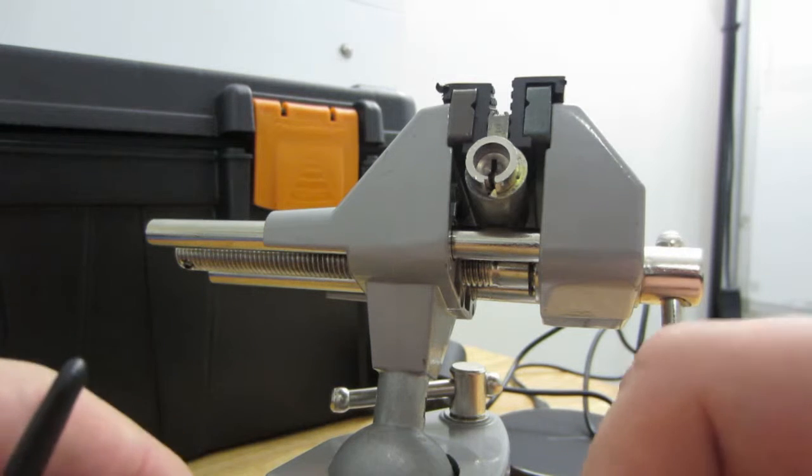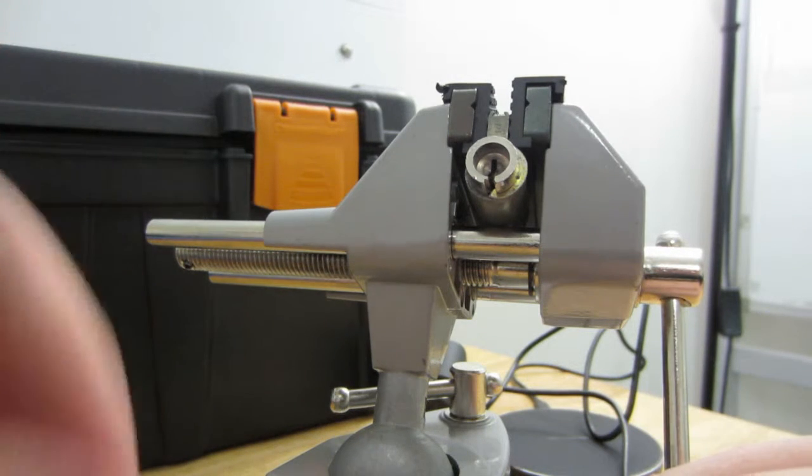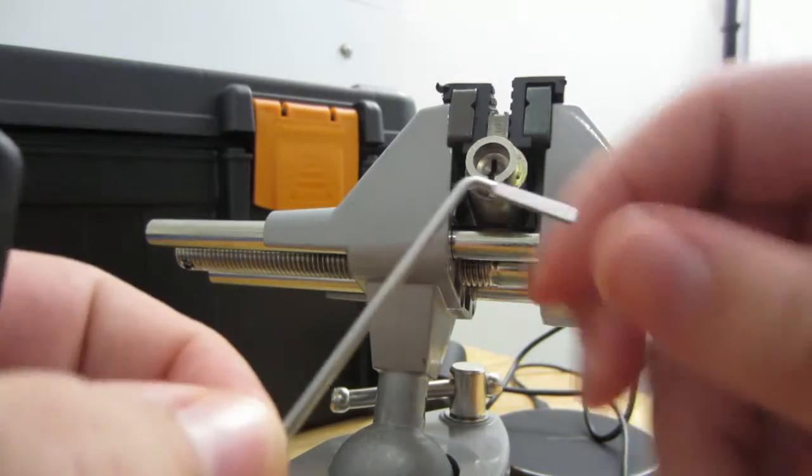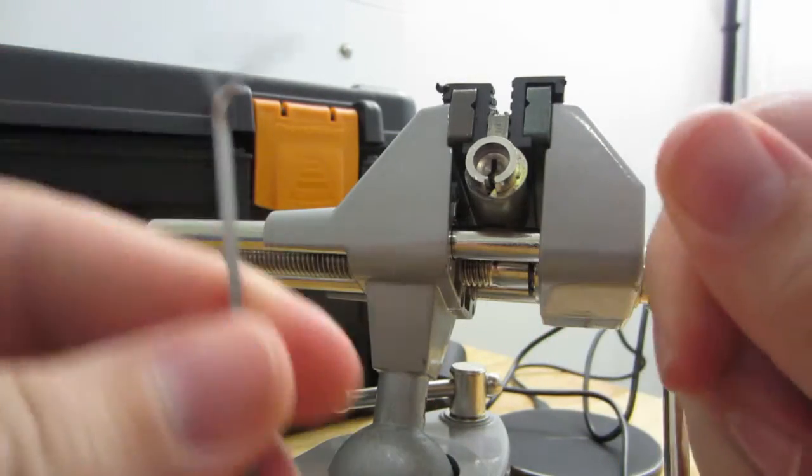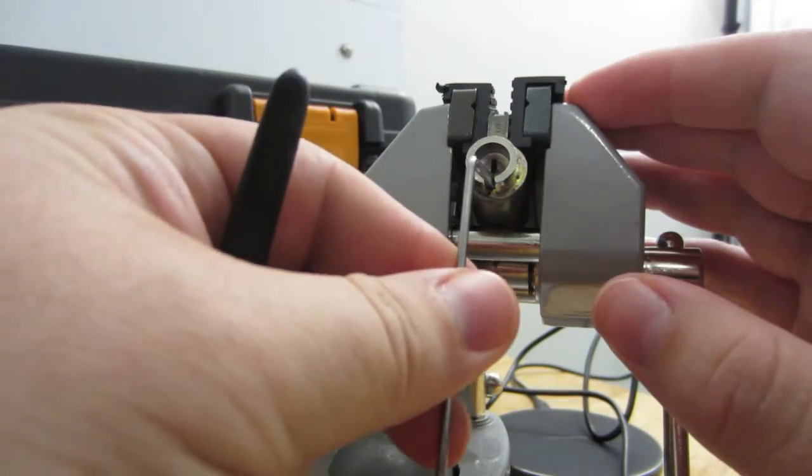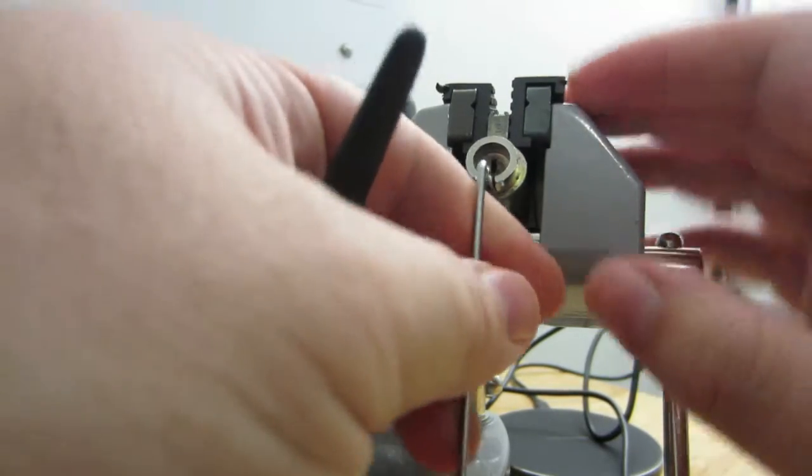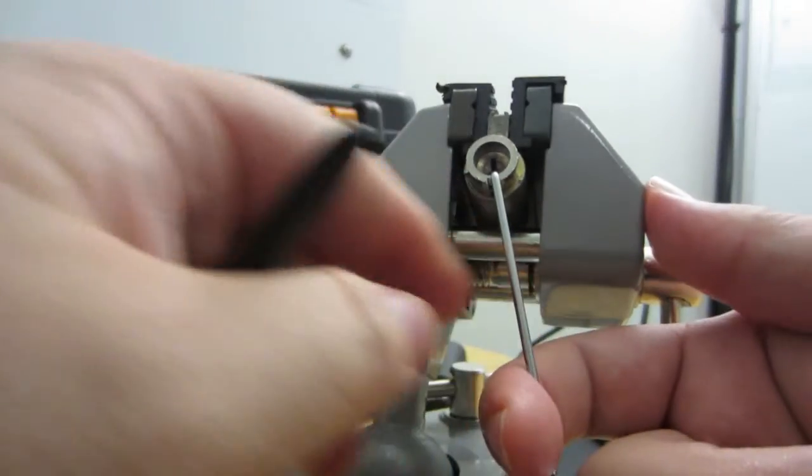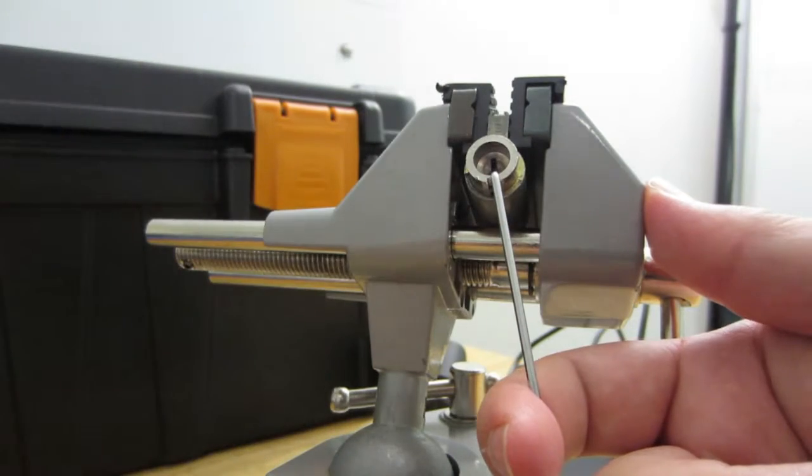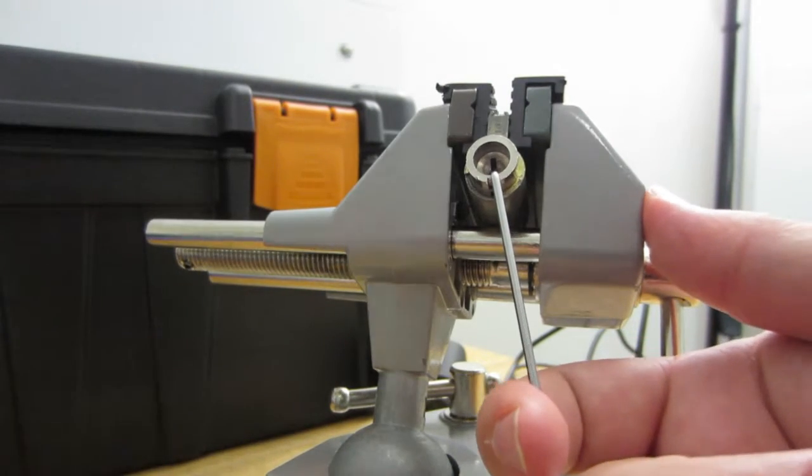I found that this Chinese tensioner does a really good job tensioning from the back. It fits into this little gap around the C-clip. I found tensioning counterclockwise works better. I'm a southpaw, left-handed, so I'll give this a go.